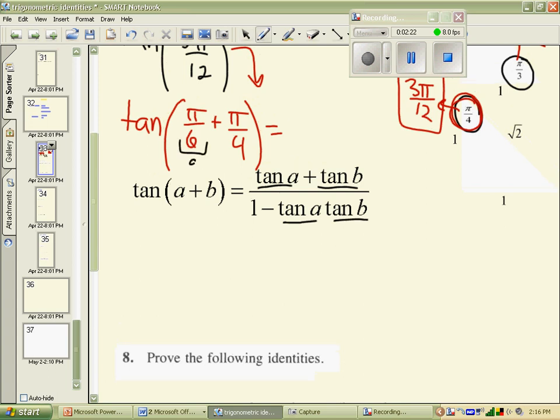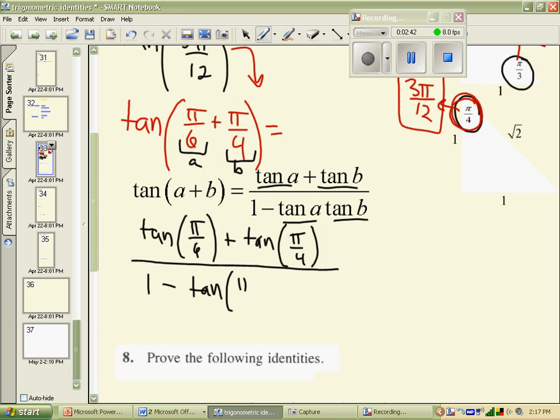And so I'm going to change this now to tan of π over 6 plus tan of π over 4 divided by 1 minus tan of π over 6 times the tangent of π over 4. Now I'm going to need my special triangles to evaluate each of those, so I'll kind of bring them down to take a look at those.